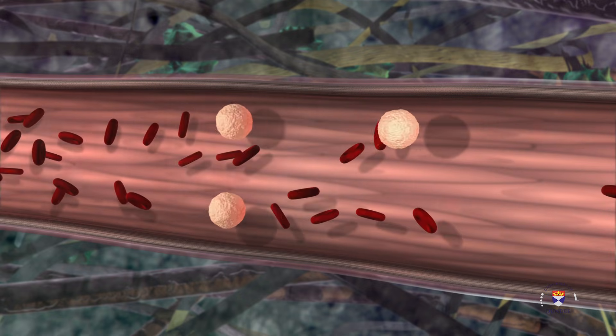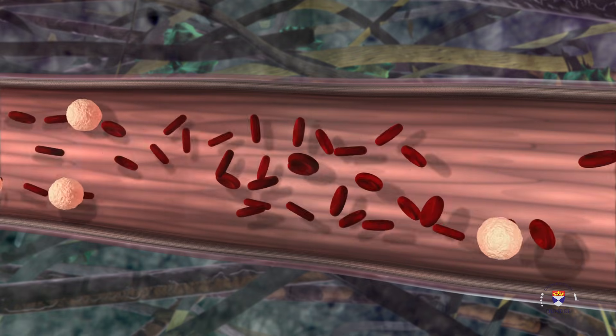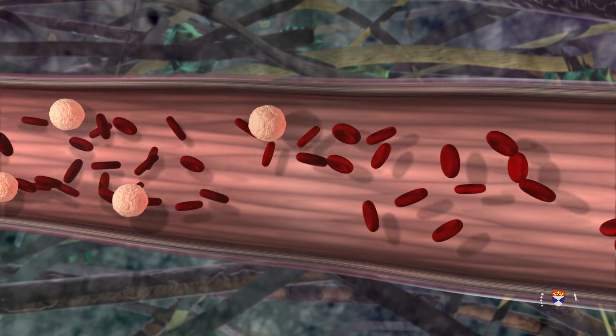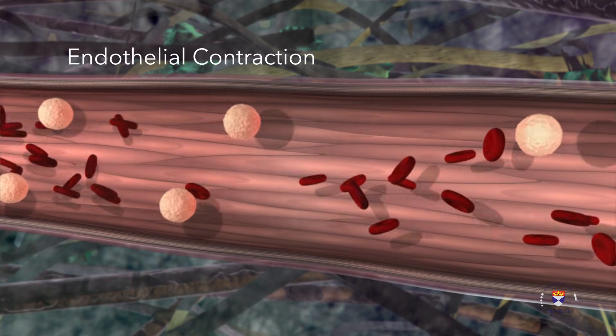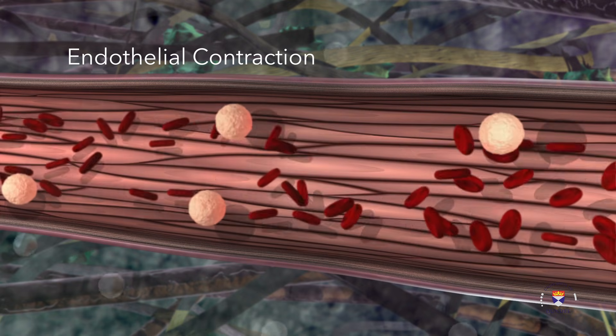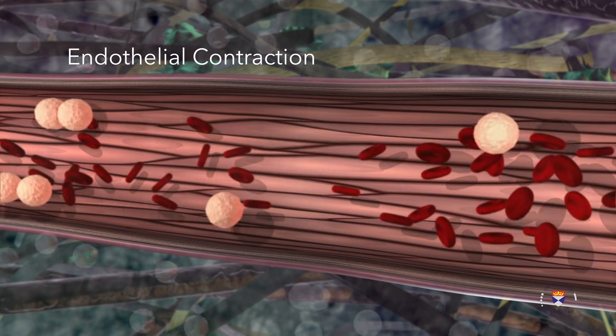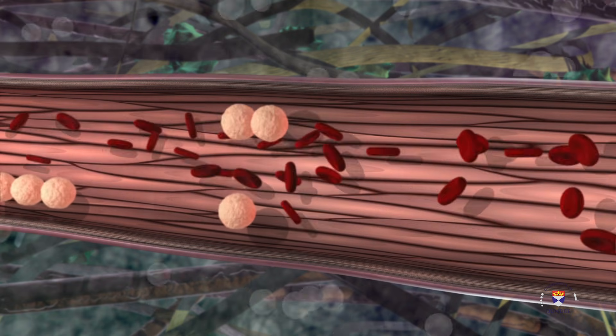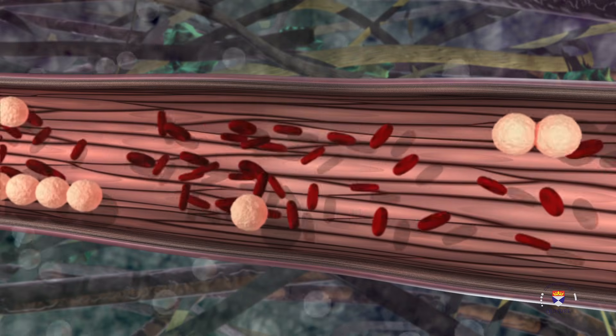Chemical signals released from the site of injury cause changes to the endothelial wall of the vessel. The endothelial cells contract, allowing fluid into the surrounding tissues through the gaps in the cells and resulting in one of the clinical signs of inflammation: swelling or edema.